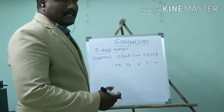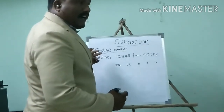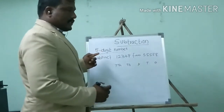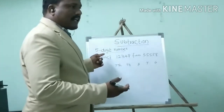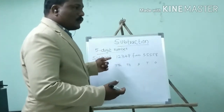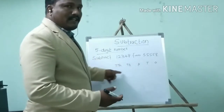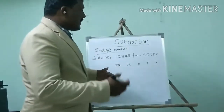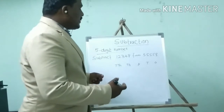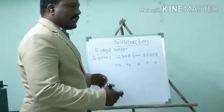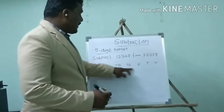Let me see some example sums — a subtraction sum with a 5-digit number. Before doing subtraction, you need to form a place value table, because it is easy for doing addition or subtraction. So before that, I have made this table.